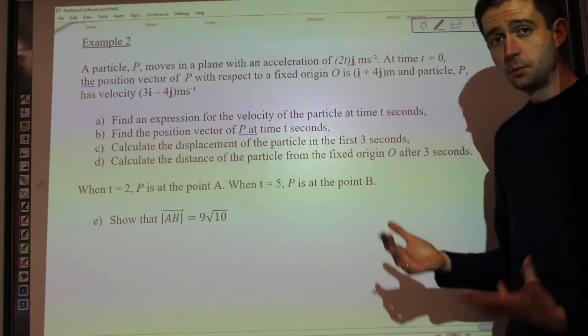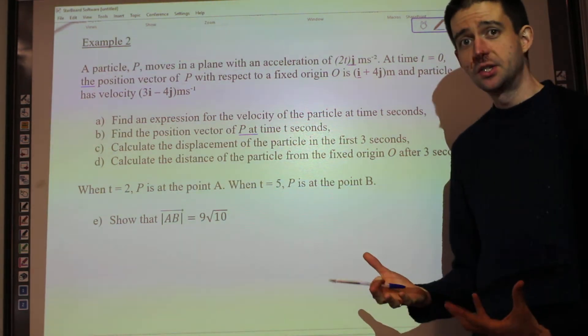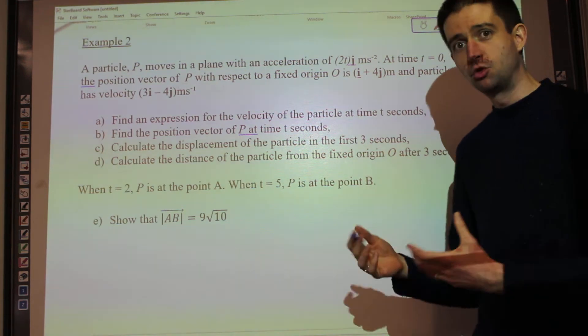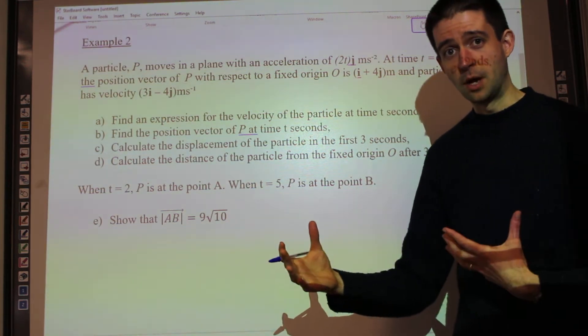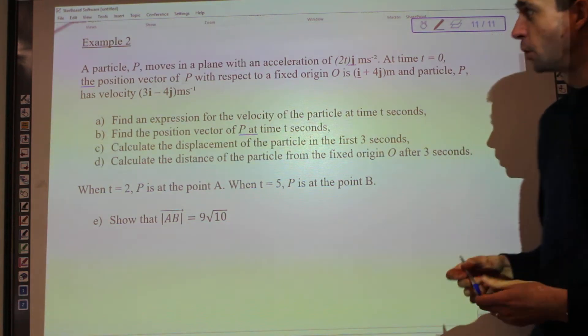What we learned when looking at example 1 was that you apply calculus in the same way as you would if it was not in vector form, but you treat the i component and the j component separately. Here we have a second example with a little bit more going on.